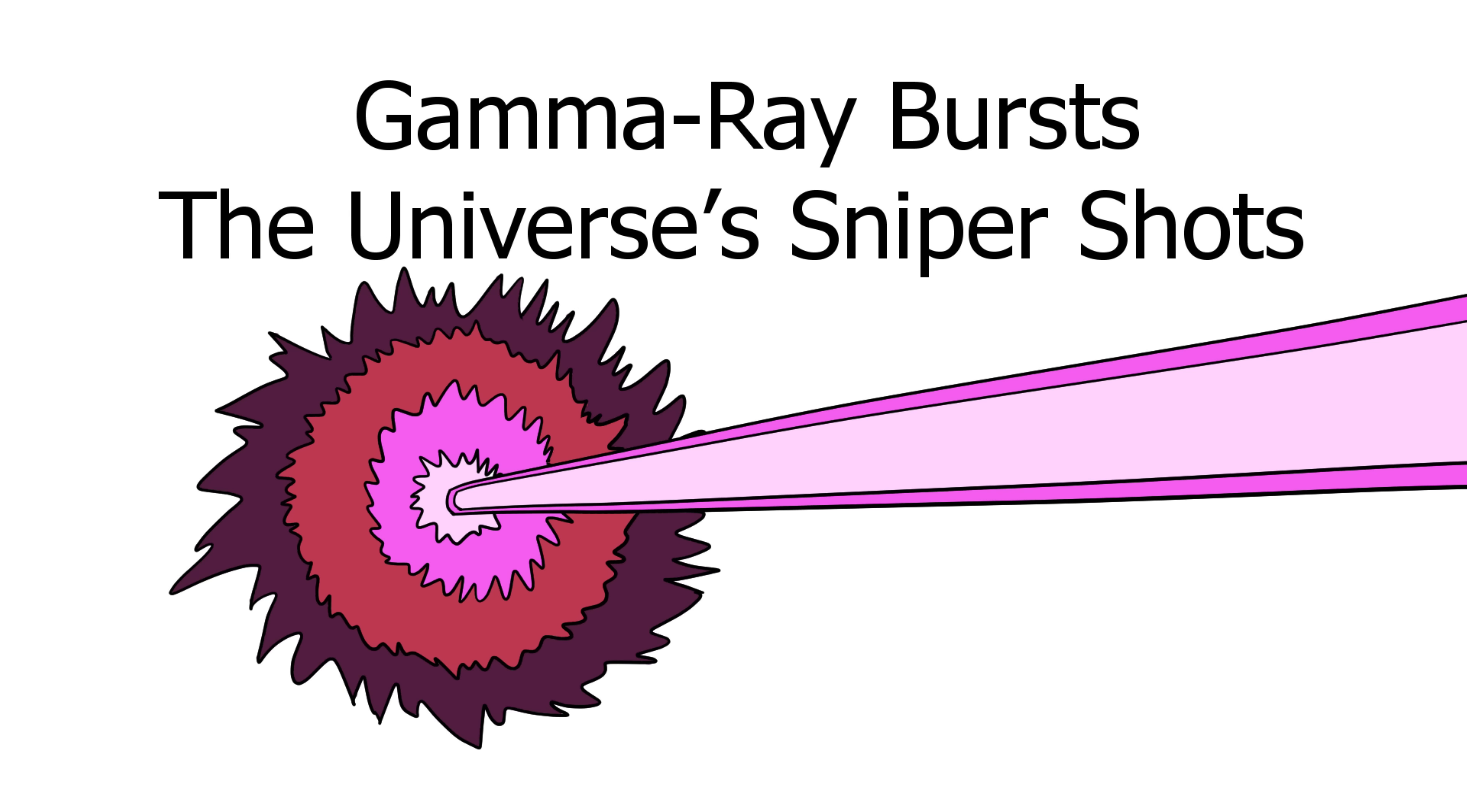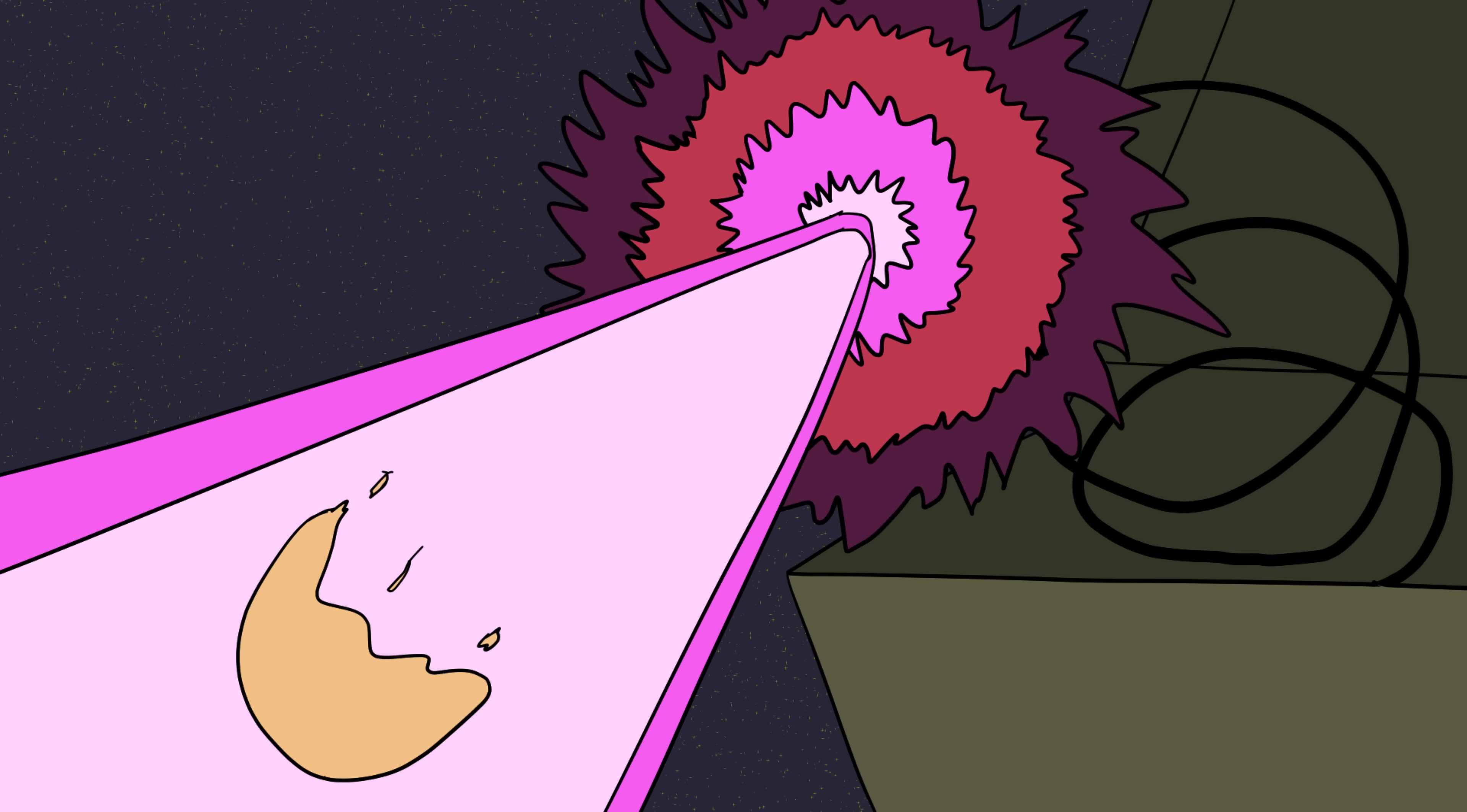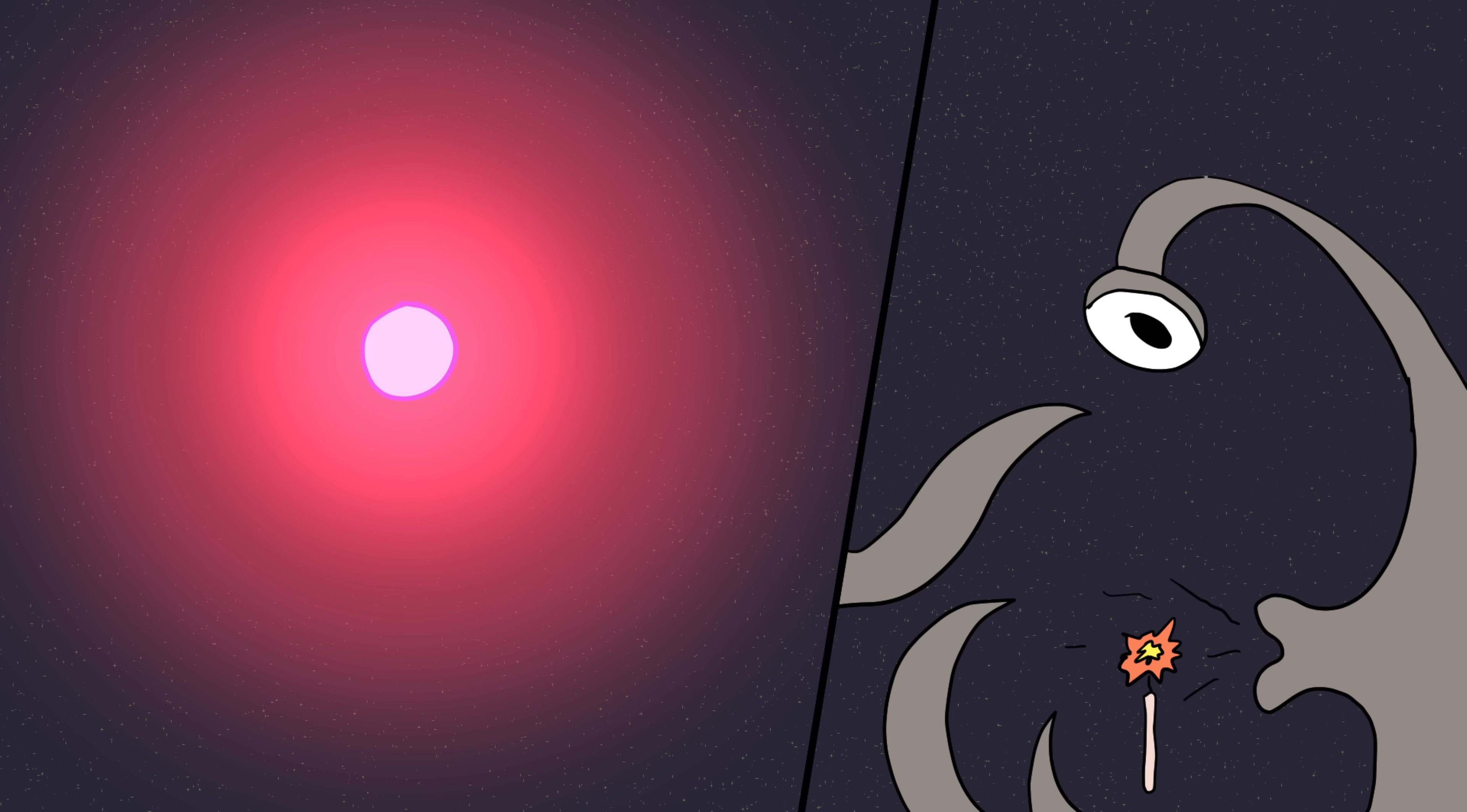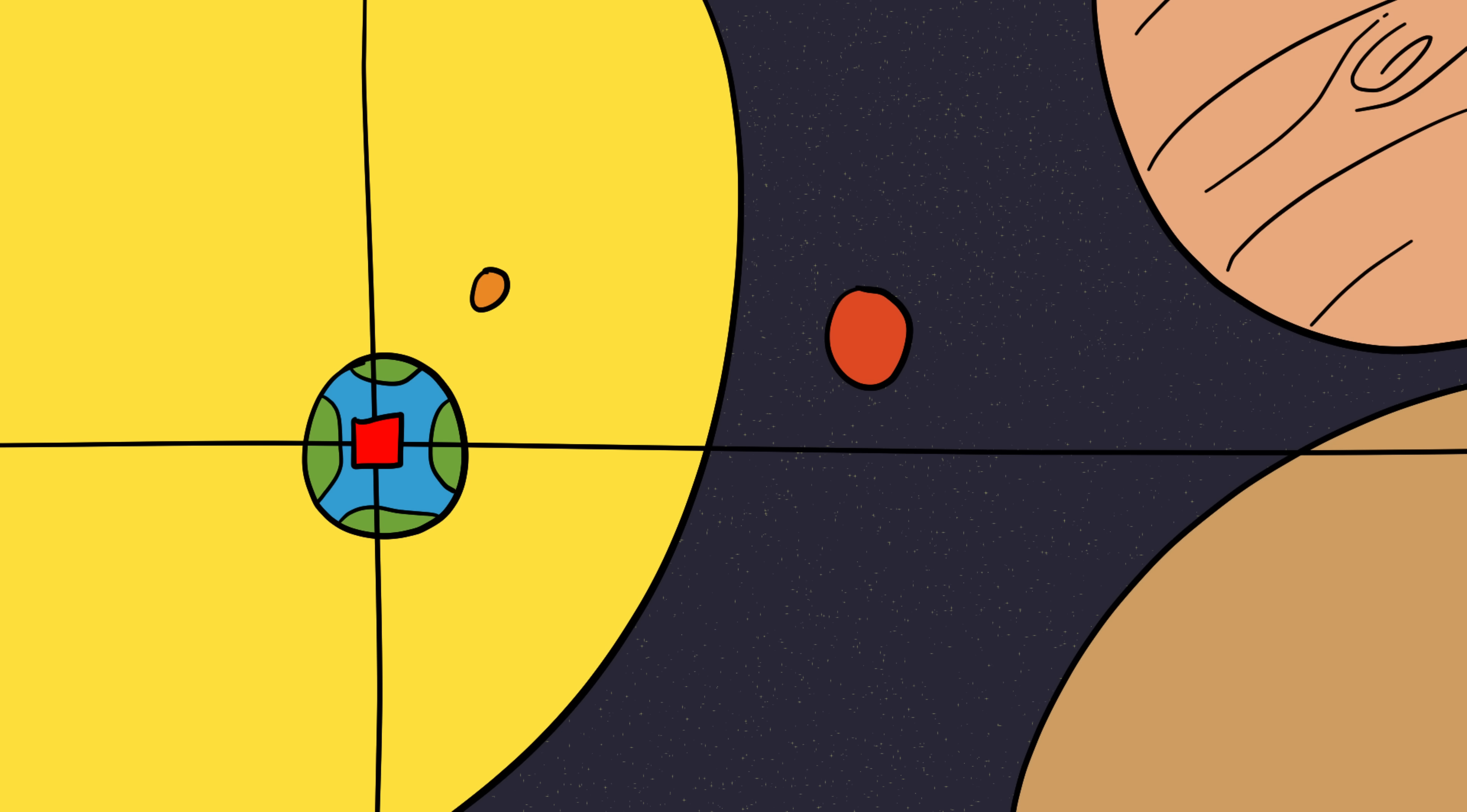Number eight, gamma ray bursts, the universe's sniper shots. If black holes are the slow burn of space horror, gamma ray bursts are the jump scare. These are the brightest explosions in the universe, so bright they make supernovas look like birthday candles. A single gamma ray burst can unleash more energy in a few seconds than our sun will release in its entire 10 billion year lifespan. And if one ever aimed at Earth, game over.